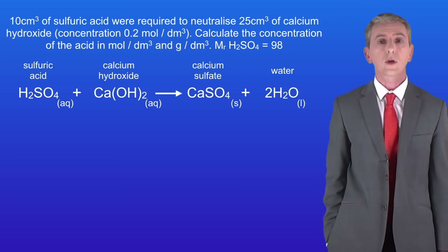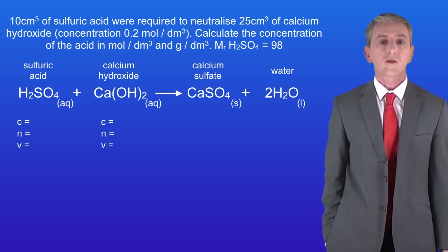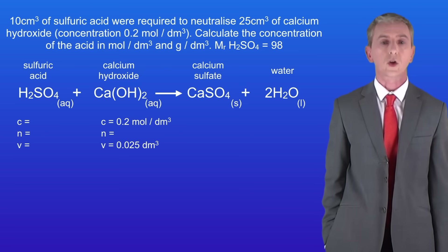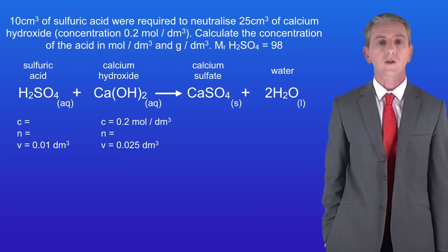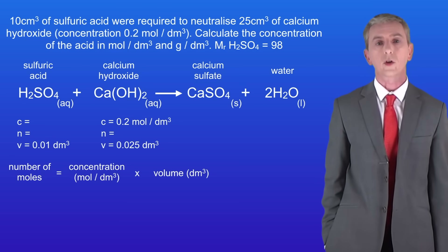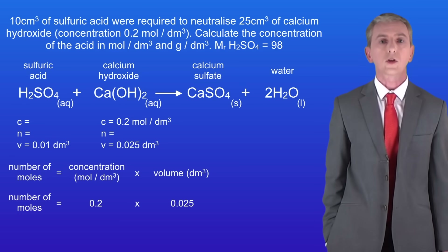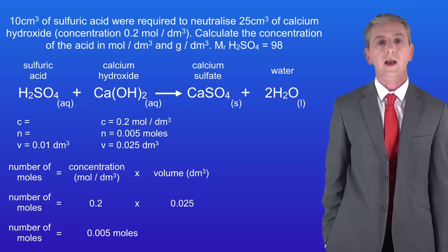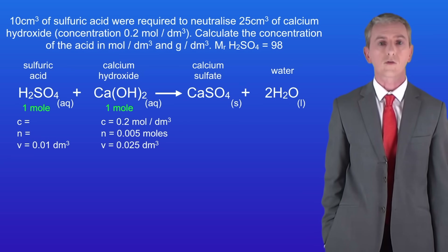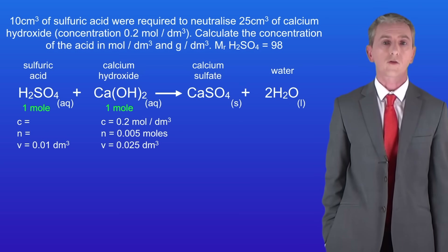First we write the letters C equals, N equals and V equals under the acid and the alkali. Now we enter all the information we've been given. The concentration of the calcium hydroxide is 0.2 moles per decimetre cubed and the volume is 0.025 dm³. The volume of the sulphuric acid is 0.01 dm³. Now we calculate the number of moles of the calcium hydroxide by multiplying the concentration by the volume: 0.2 multiplied by 0.025 gives us 0.005 moles. Looking at the chemical equation, one mole of sulphuric acid reacts with one mole of calcium hydroxide.